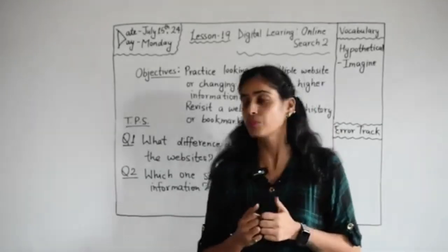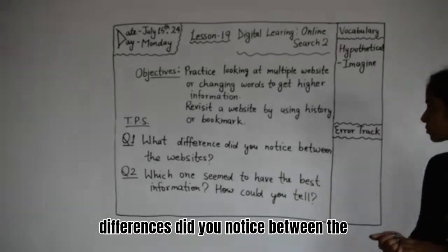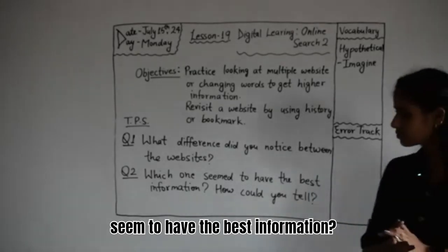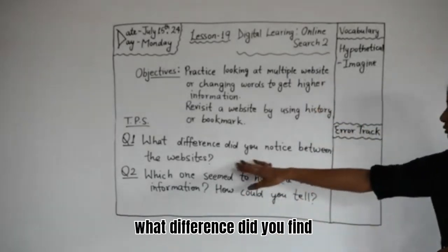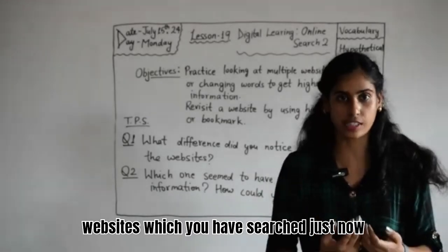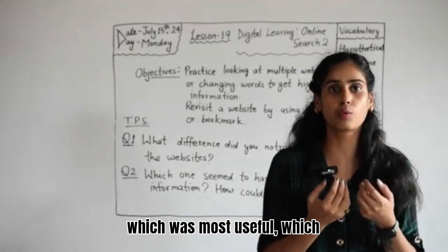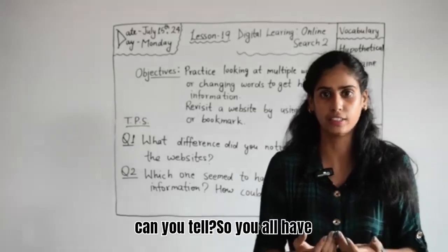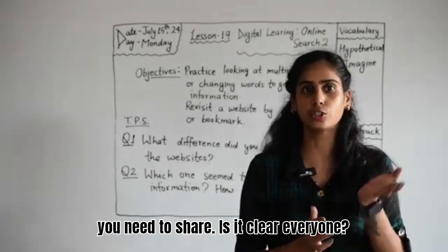So now I have two questions for you. Priya, please read the first question: What differences did you notice between the websites? Smriti, can you read the second question: Which one seemed to have the best information? How could you tell? So discuss what differences you found between the websites you searched, and which website had the most useful information and why. You have 2 minutes to discuss with your peer.